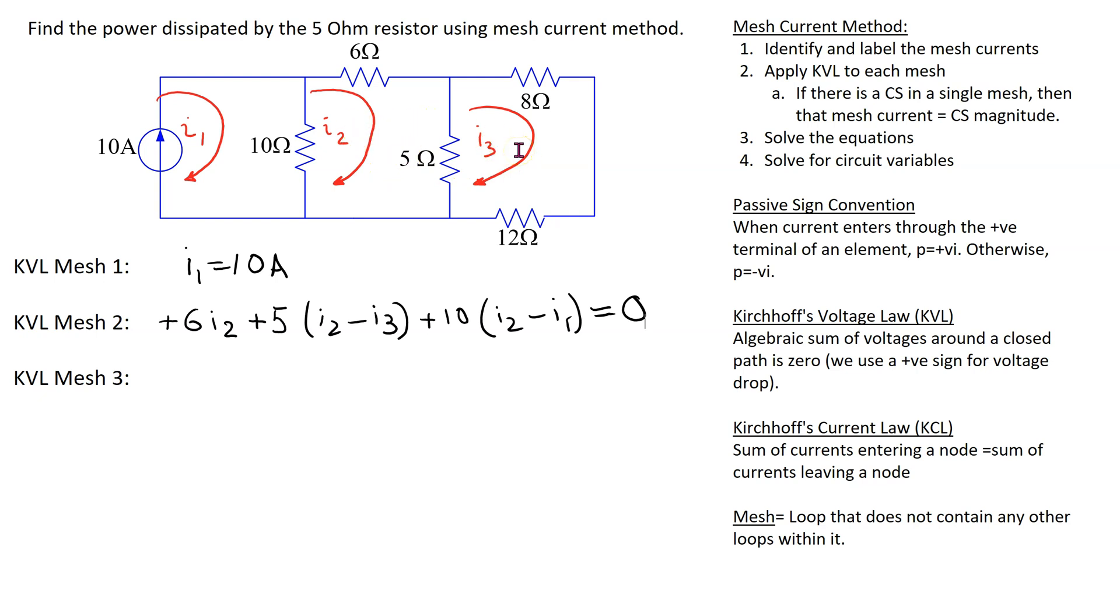Since we are writing KVL for mesh 3, we give priority to the direction of I3. So, this voltage drop is plus 5 I3 minus I2. Then we have the 8 ohm resistor. So, this is plus 8 I3.